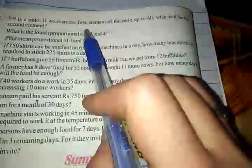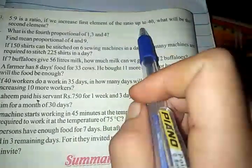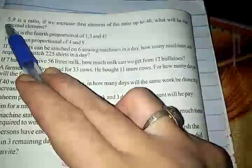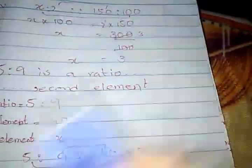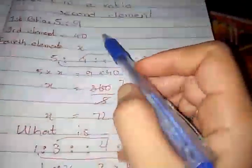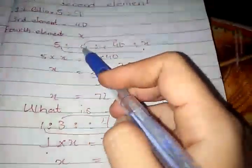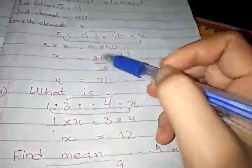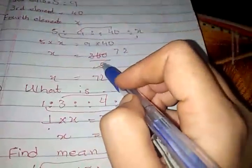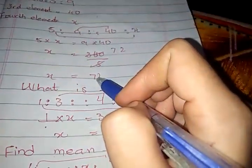Question number 3: 5 ratio 9 is a ratio. If we increase the first element of the ratio to 40, what will be the second element? We suppose the fourth element is X. The proportion is 5 ratio 9 proportion 40 ratio X. 9 and 40 are means; 5 and X are extremes. 5 × X = 9 × 40. 9 × 40 = 360, and 360 is divided by 5. The fourth element is 72.